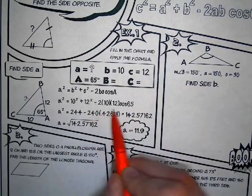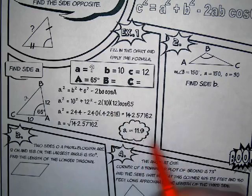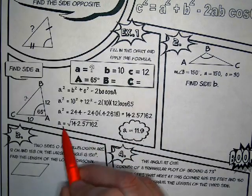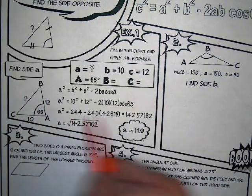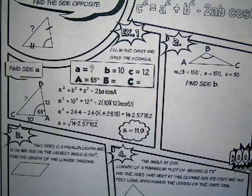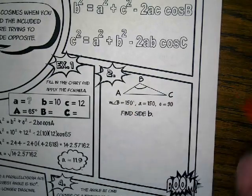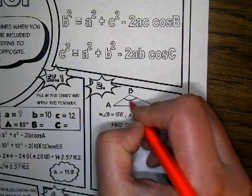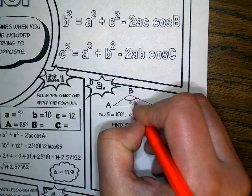Each side squared added together, minus 2 times the two sides multiplied, times cos of the angle that's in between. If you can memorize it that way, that's the better way to memorize it. Then they plugged everything in and got A squared equals a big number, then they square-rooted that big number and got the missing side. So we're going to do the same thing. They told us that the measure of angle B is 150 degrees.